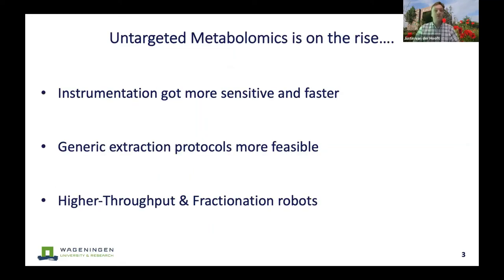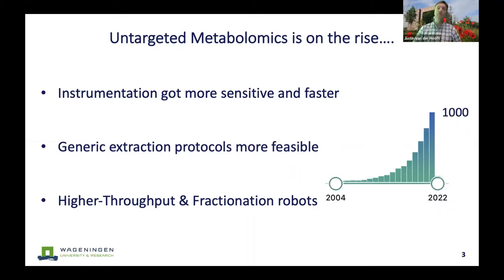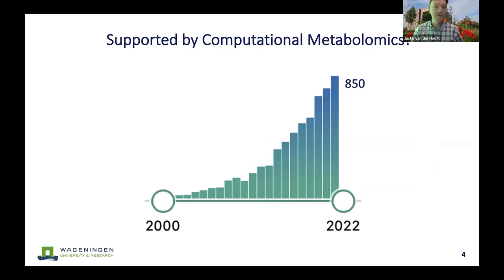Untargeted metabolomics as a whole is on the rise because of amazing instrumentation, better generic extraction protocols, and automation. More than one thousand publications were published last year mentioning it. I also strongly believe it's supported by computational metabolomics, because you can now generate a lot of MS and MS/MS data. Computational tools including MZmine, molecular networking, and others have played a pivotal role in driving the field.